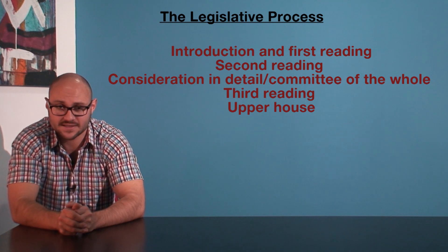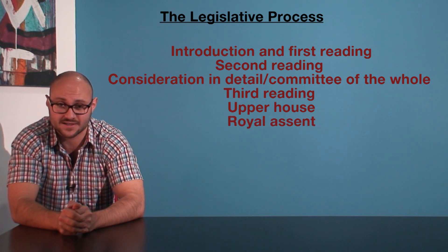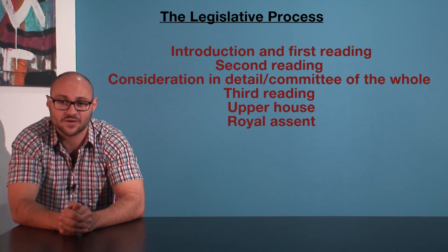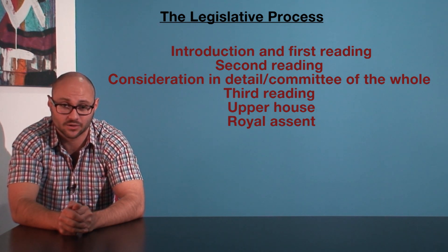If the bill passes through both houses, it then goes to the Crown for royal assent. Royal assent is when the Crown formally approves the bill, which means that it can become law.